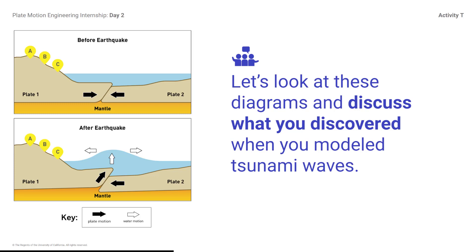Let's discuss what you discovered when you modeled tsunami waves. How was the model realistic and how was it simplified? How were you able to generate a tsunami wave? How were the two types of waves different? Which locations on the shore were most affected? You might respond: Realistic — it had real water and the waves moved like real waves. Simplified — the seafloor was smooth plastic instead of sand and rock. Tsunami waves were bigger and more destructive. The lowest locations closest to the shoreline were most affected. The tsunami tank is a model of an ocean system, showing how something in one part of the ocean affects another part.